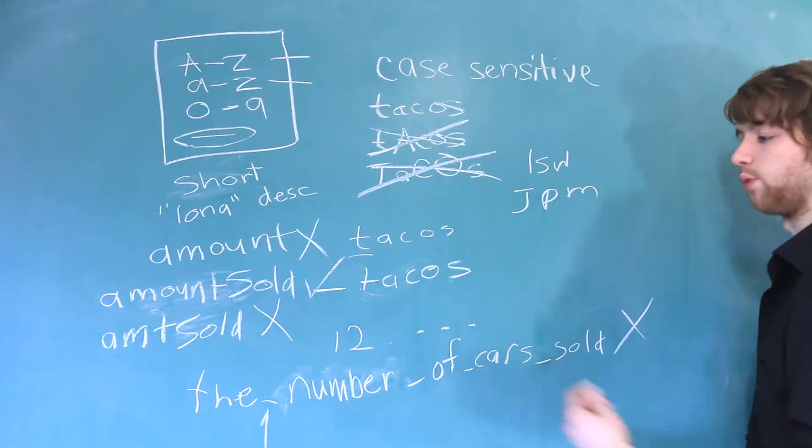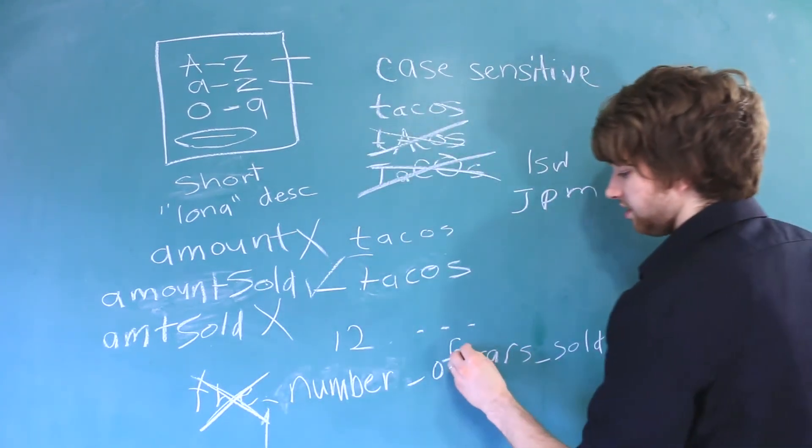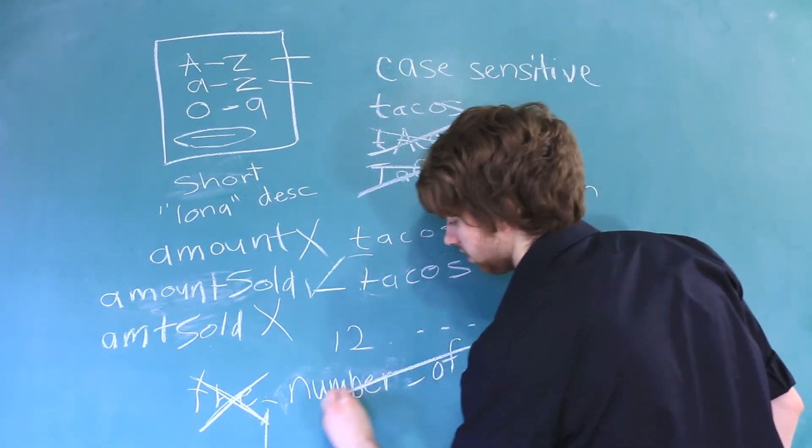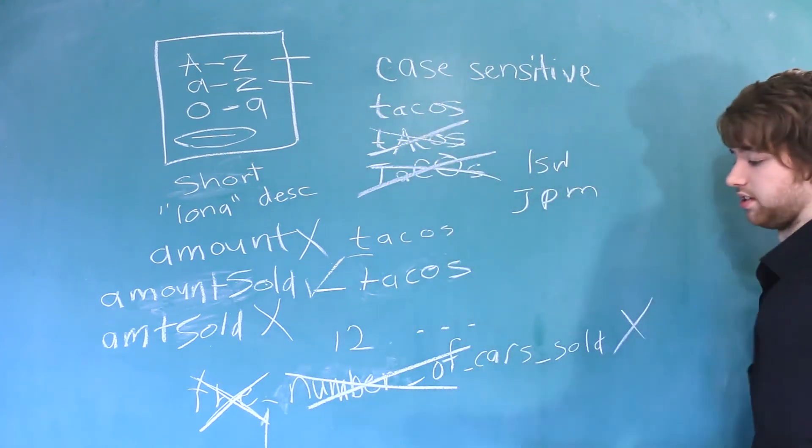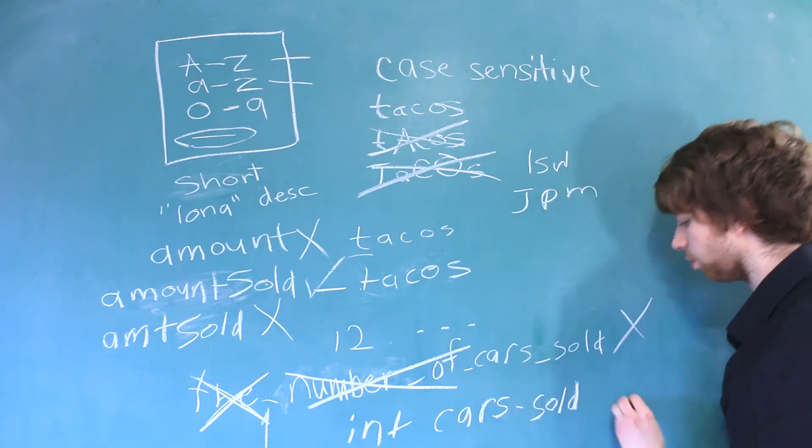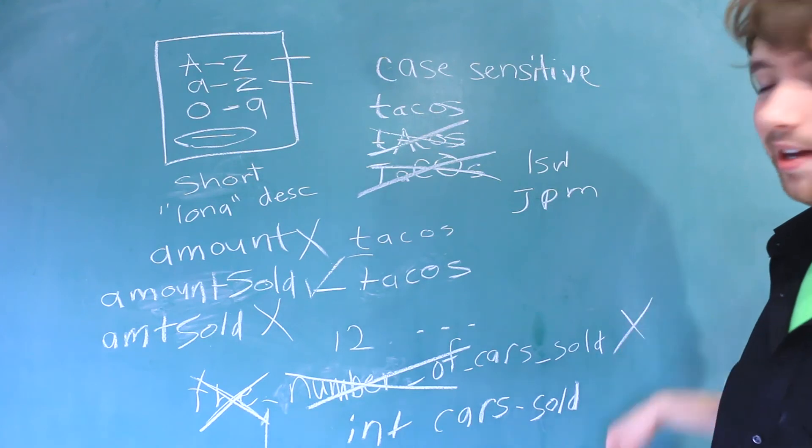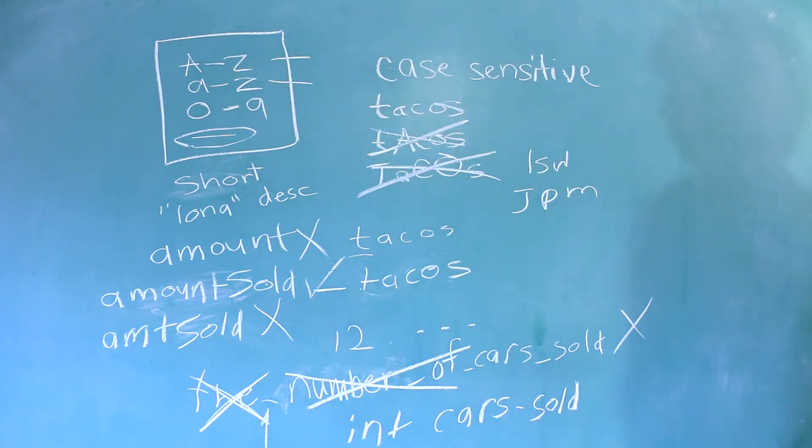To improve this, you could just get rid of useless words. You're never going to need the and even this number of is kind of redundant. That's because you can figure that out from the data type. If we have int cars sold, that makes just as much sense as the number of cars sold. And it's way easier to type too.